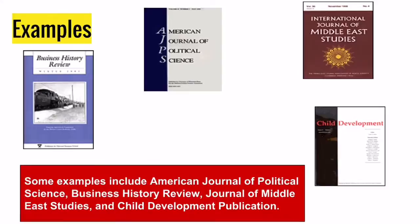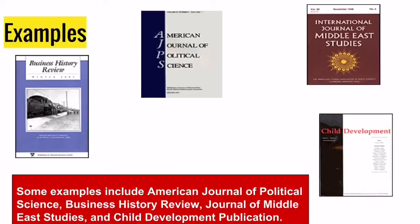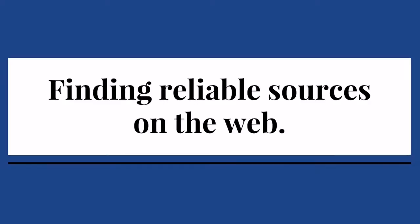Scholarly sources are reviewed by an editor and other specialists before being accepted for publication. Some examples include the American Journal of Political Science, Business History Review, Journal of Middle Eastern Studies, and Child Development Publication.